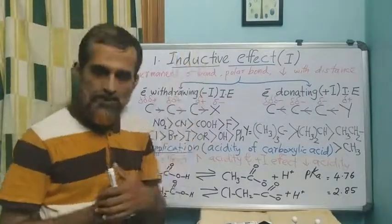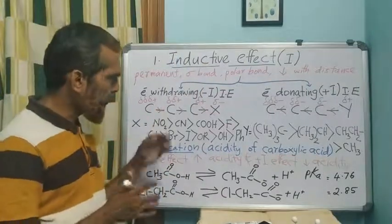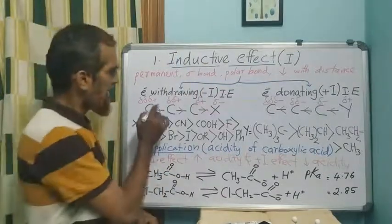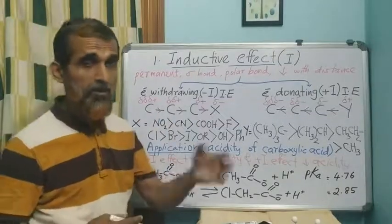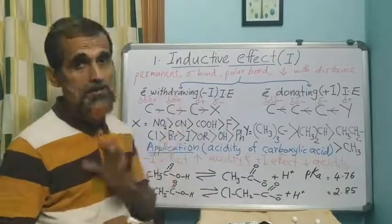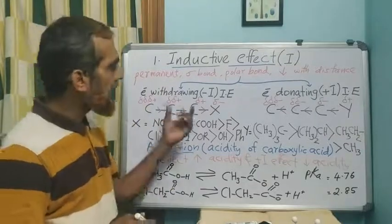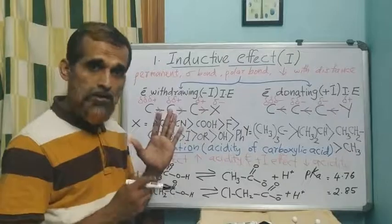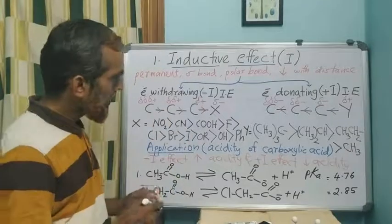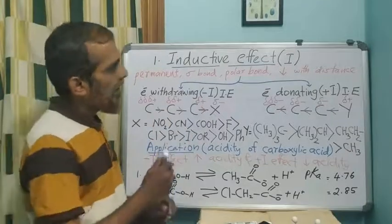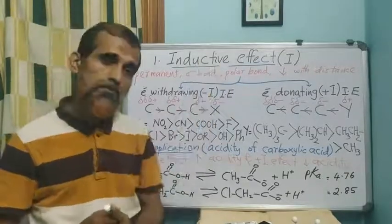What is the inductive effect? It is an electron displacement effect which operates only in sigma bonds — it is the electron displacement of sigma electrons, permanently — and it is because of electronegativity difference between the bonded atoms. The term 'inductive' is used because polarity is induced.